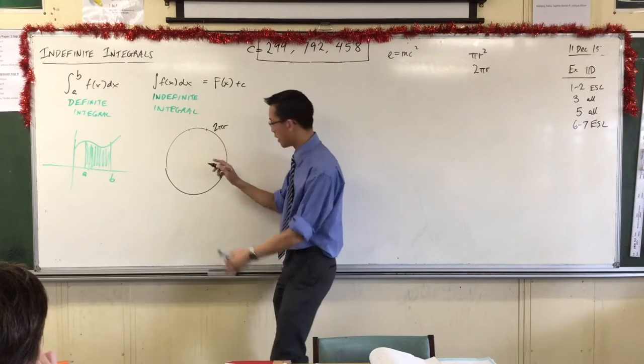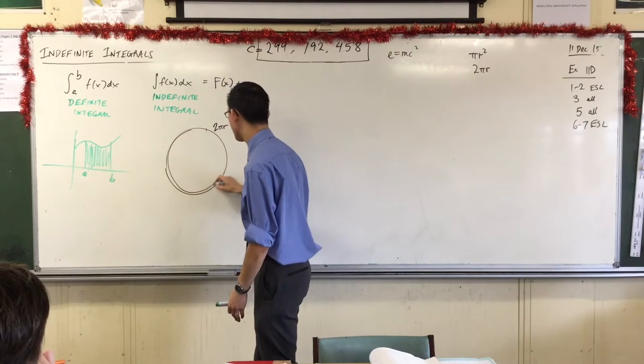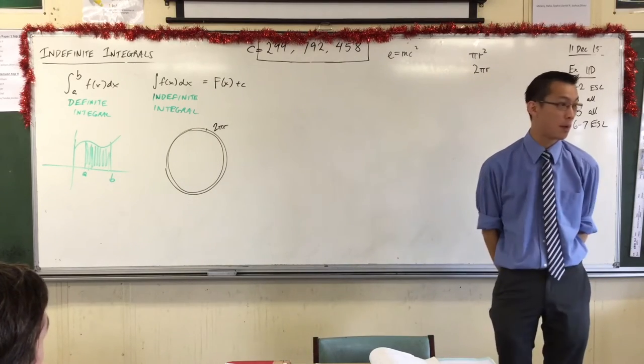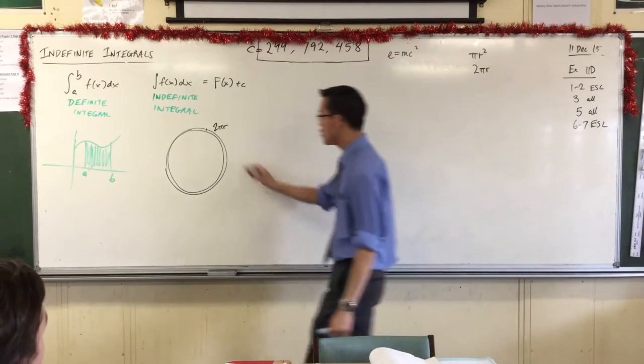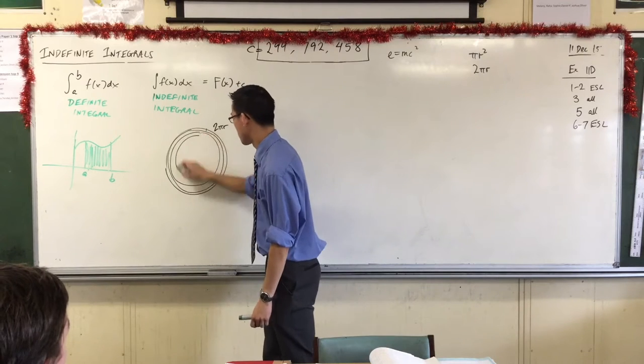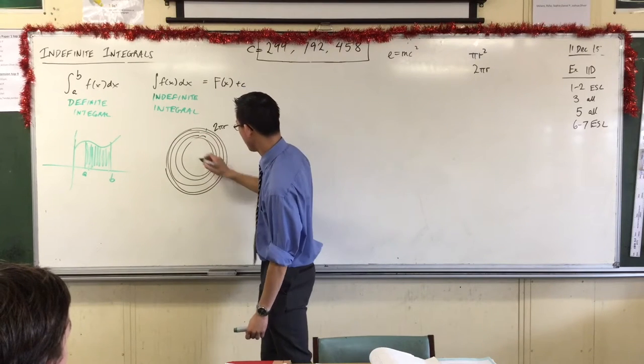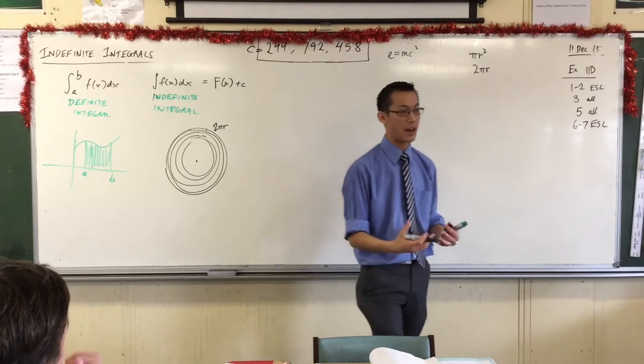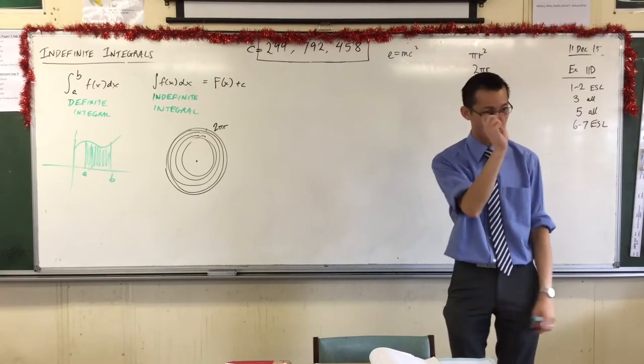Now if you go a little bit smaller, you have another circumference that has a radius, a circumference that's 2πr, less than that. And then you get one that's smaller again, smaller again, smaller again, and eventually you will get a circumference which has no length, it's of zero length.